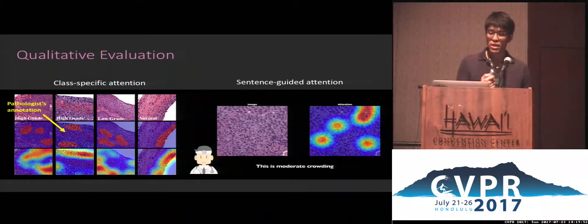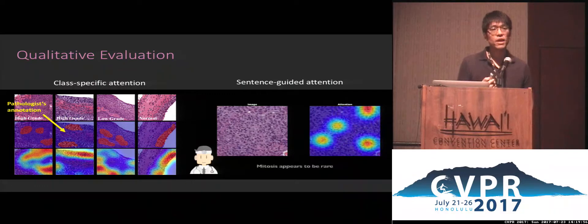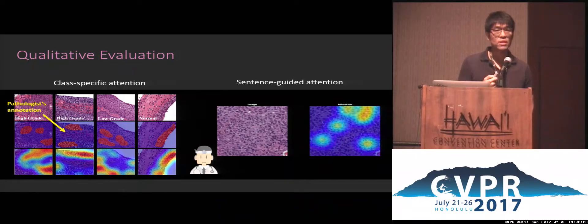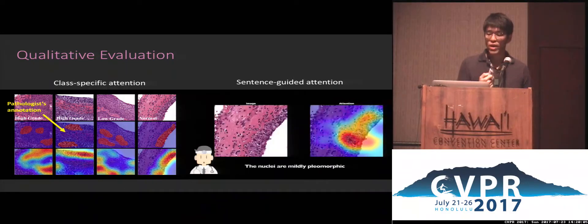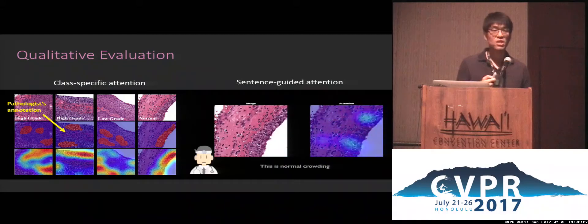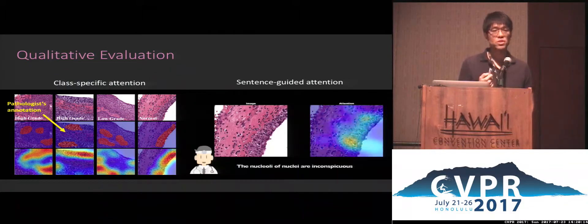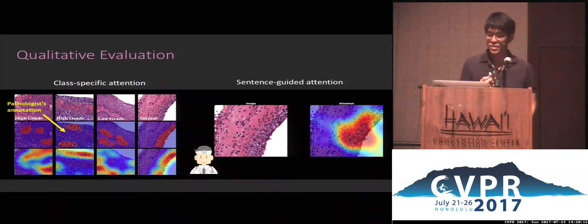Our model also produces two kinds of attention. The left side shows the class-specific attention output by the AES model, which shows quite high correspondence with the pathologist annotations in the correct regions. The right side shows the attention from the attention model. As can be observed, the attention model can capture the nuclear dense regions with high cell variances, which is in agreement with the pathologist's opinion.